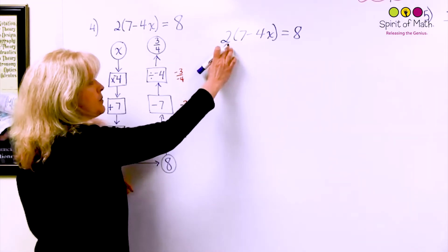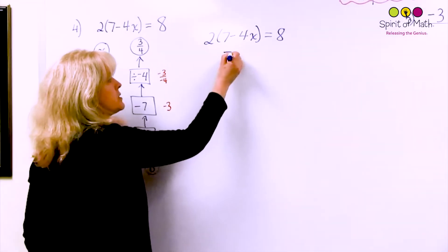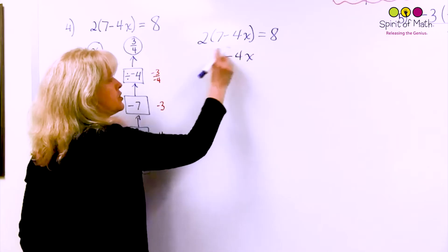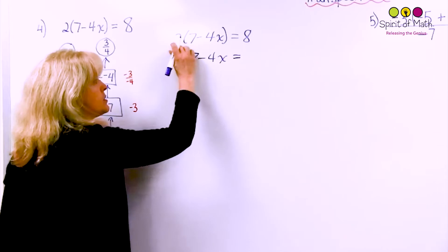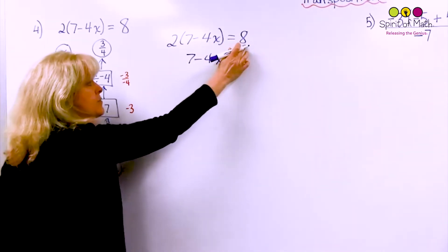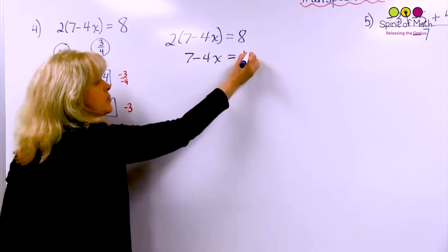It was times 2, so the opposite of times 2 is divided by 2. So you take this 7 minus 4x because you're dividing out that 2. You're actually getting rid of that 2 from this side. And when you divide by that 2, you have to divide by the 2 for this side. So that would be 8 divided by 2 which is 4.